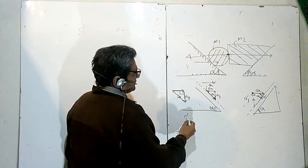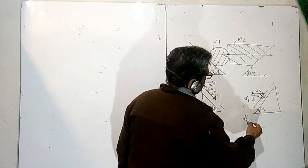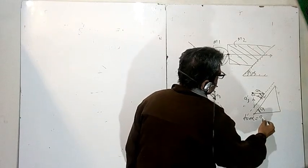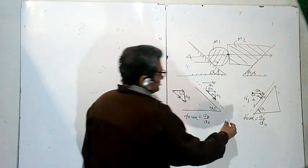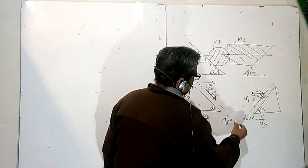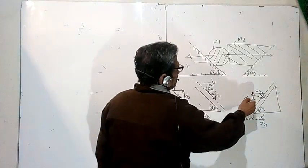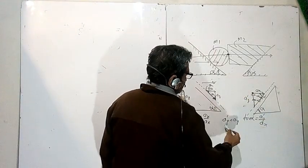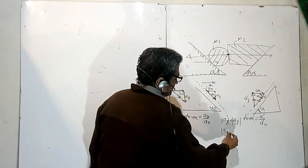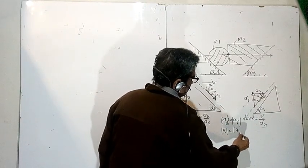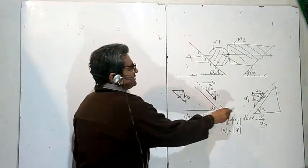So tan alpha is AY upon AX. And tan alpha is equal to AY' upon AX. So AY' is equal to AY but in the opposite direction. AX and AY' are equal to AY's magnitude. The magnitude of A is equal to the magnitude of A', so both accelerations — A goes one way and A' goes the other way.